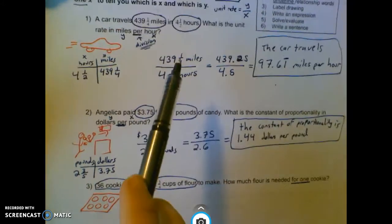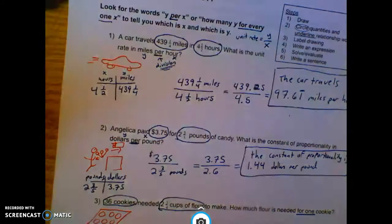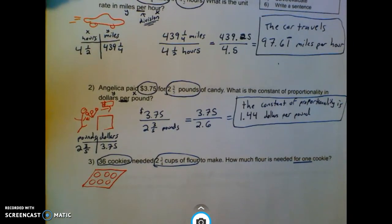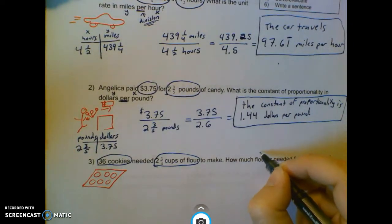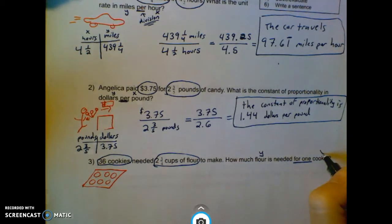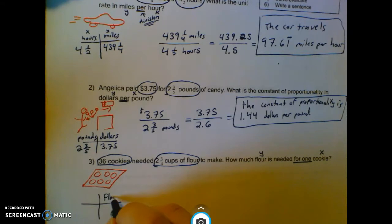That is this structure that we saw up here, for every one. So how much flour is needed for one cookie? This is going to tell me how much flour is Y. Cookie is X. So when I set this up, this is flour, cookie. So 36, 2 and 3 quarters.